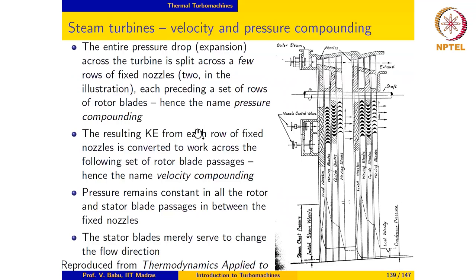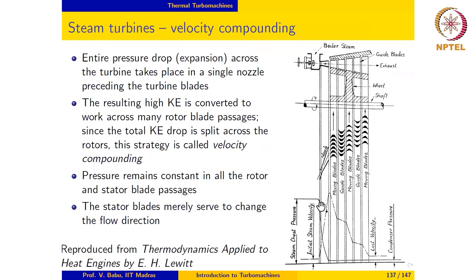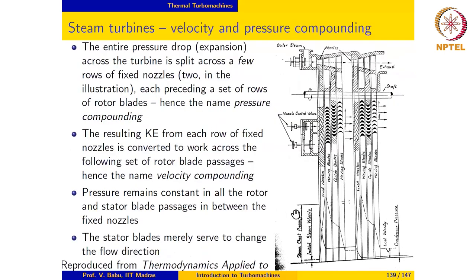The next strategy is pressure and velocity compounding. Here, both velocity change and pressure change take place in a stepwise manner. Basically, instead of having one nozzle the pressure drop takes place across two or three nozzle sets — not as many as in pure pressure compounding, but a finite number. In between the nozzle sets, velocity is compounded. There is one set of nozzles here and another set here, so instead of the pressure drop taking place across one nozzle, it now takes place across a finite number.